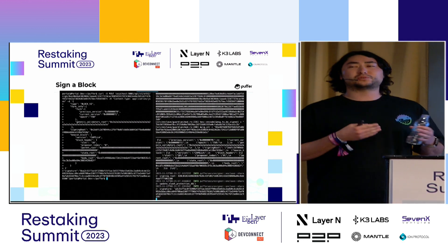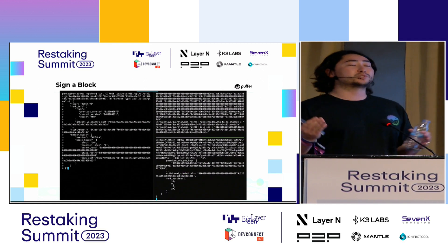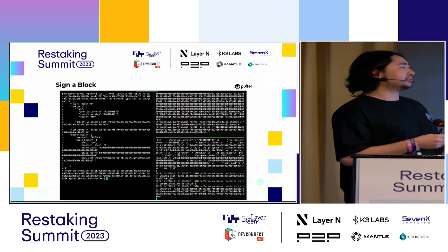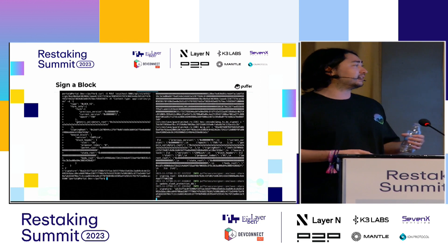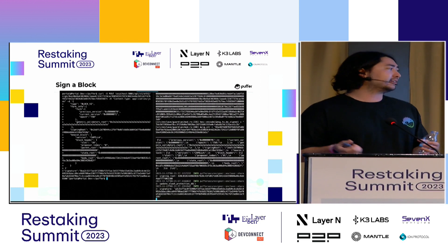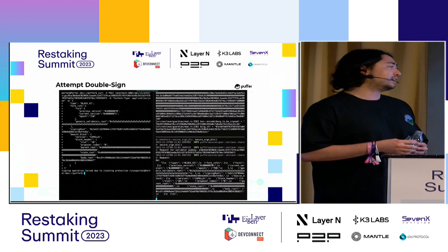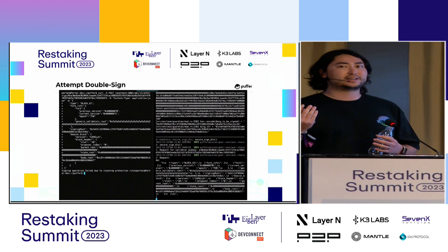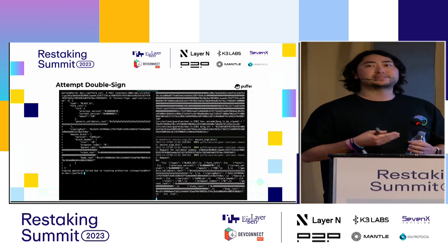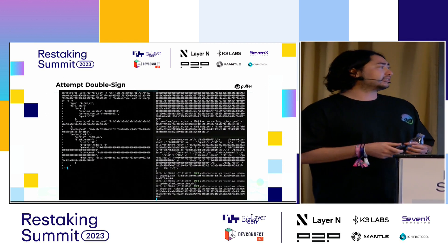Normally you'd use your Secure Signer running alongside your consensus client and it's all abstracted away. But in this example, we can simulate by sending it a block. We send it with slot number 10 and it generates a signature. If we then attempt to double-sign, it simply fails because we violated the rules — you can't sign two blocks at the same height. The logic within the enclave and the memory it kept of the last block signed will prevent this.